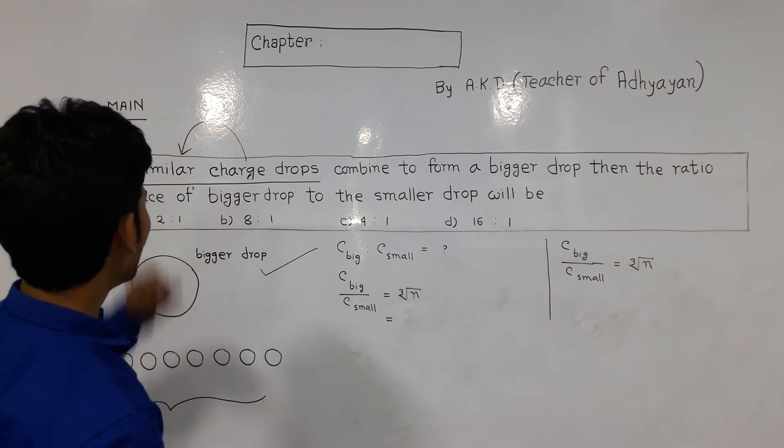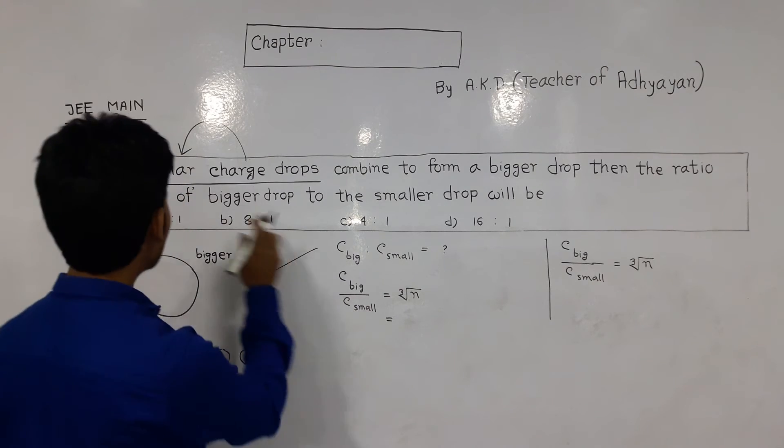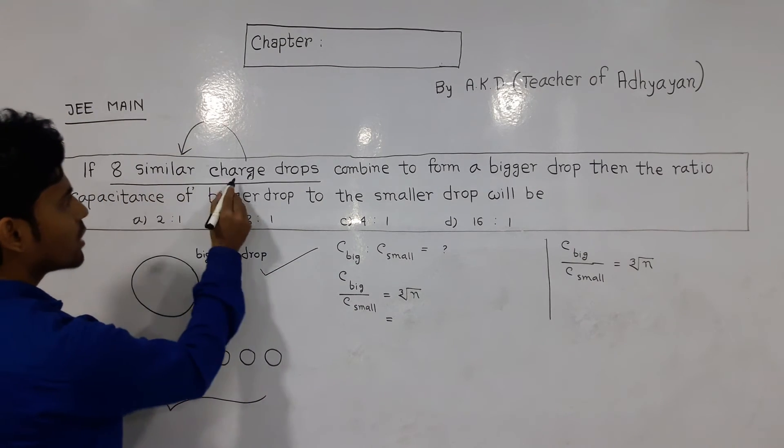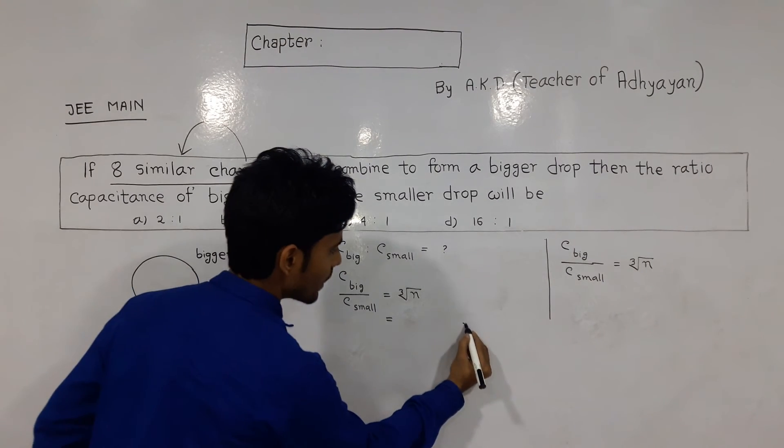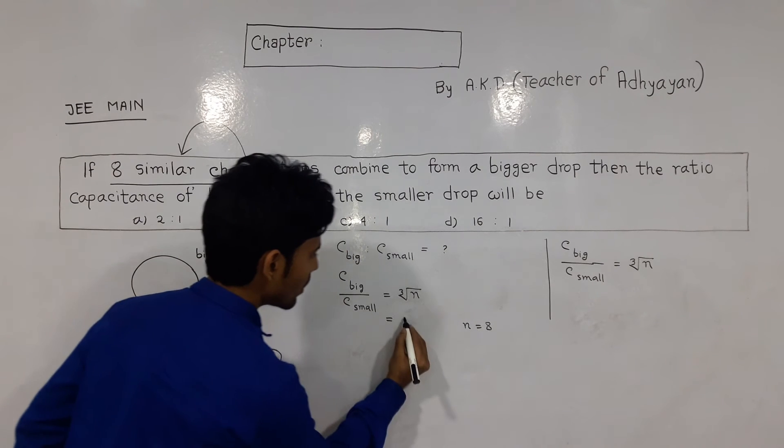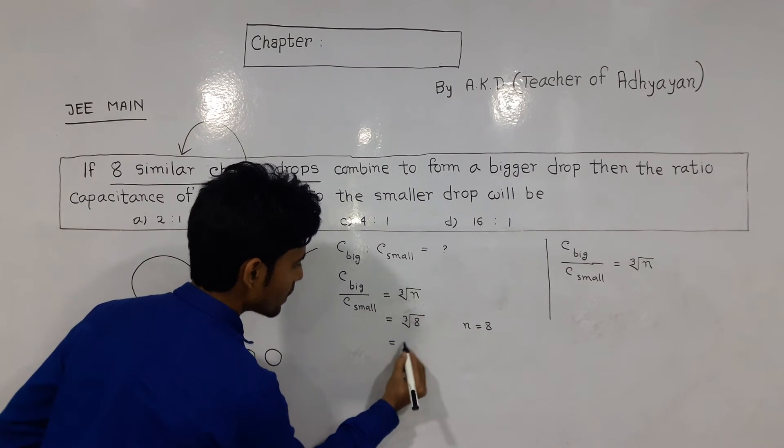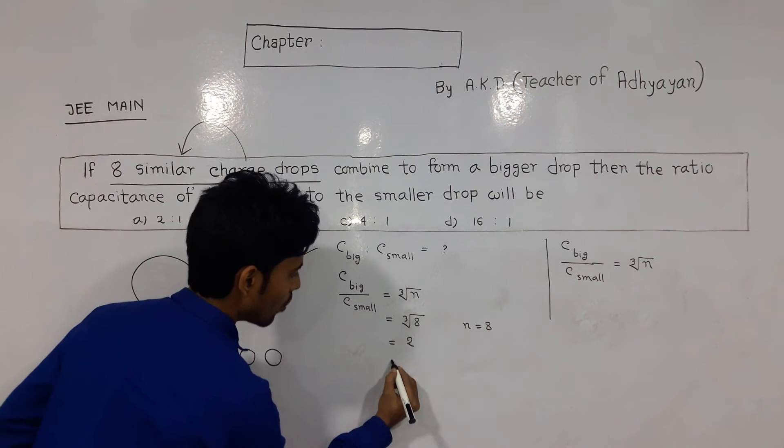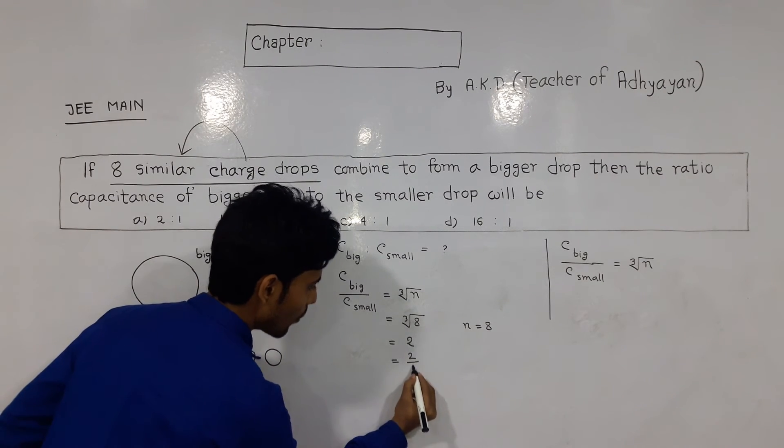Here the value of n is given as 8. Eight similar charge drops, so n equals 8. Cubic root of 8, that is 2, gives us 2 upon 1.